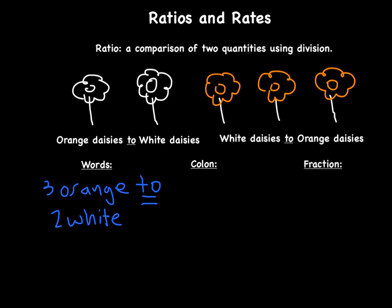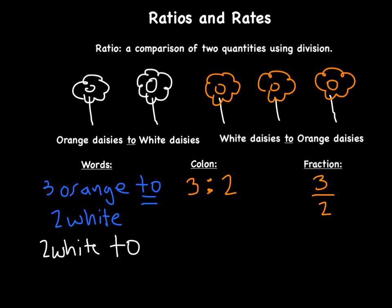As a colon, I would write '3 orange daisies : 2 white daisies' — the colon represents the word 'to.' As a fraction, we go left to right, so we have orange daisies on top: three over two. You'll notice I underlined the word 'to' — that's going to be important here in just a few minutes.